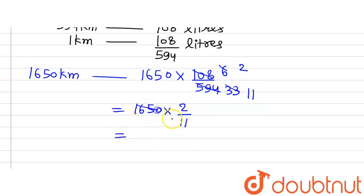Now dividing 1650 by 11: 11 into 16 gives 1 with 5 remaining, then 55 divided by 11 equals 5, and 0 remains. This gives us 150.